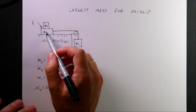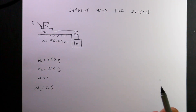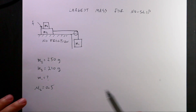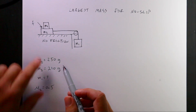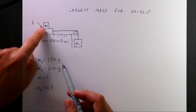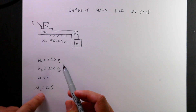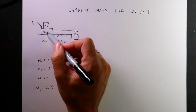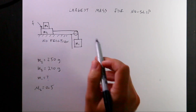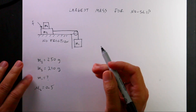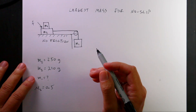So I picked some masses. Mass 2 is 250 grams, mass 3 is 210 grams, and the coefficient of friction is 0.5 between mass 2 and mass 3. There's no other friction anywhere else. So this is a half Atwood machine problem.